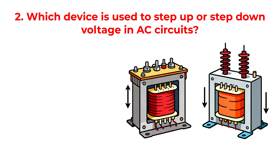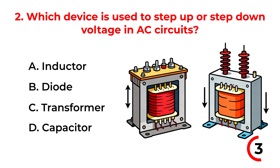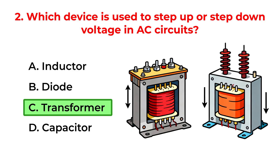Which device is used to step up or step down voltage in AC circuits? A. Inductor. B. Diode. C. Transformer. D. Capacitor. Correct answer is option C. Transformer.